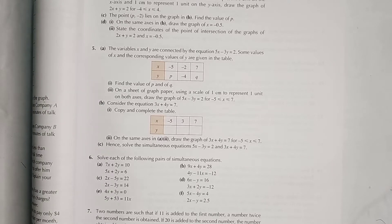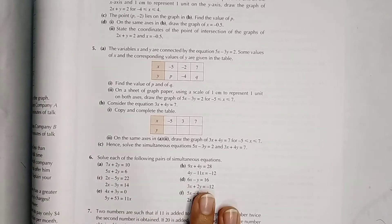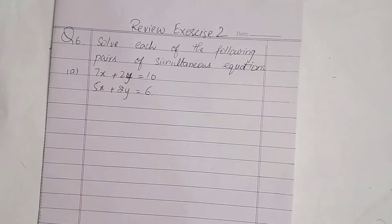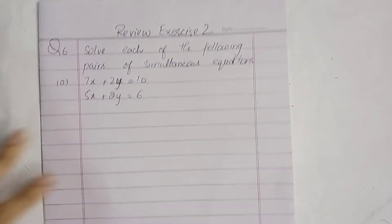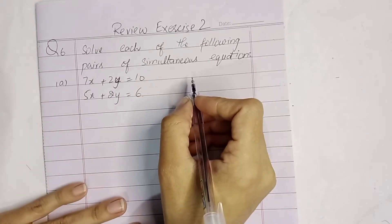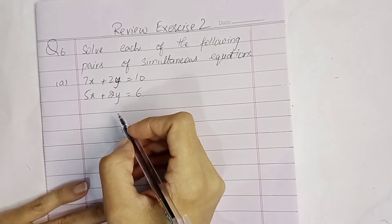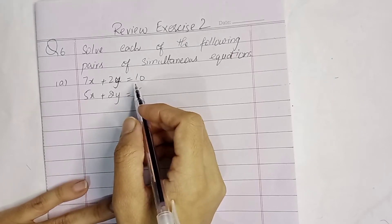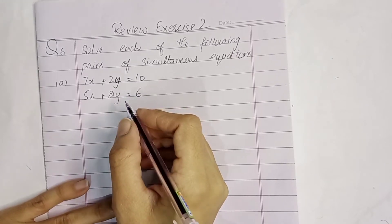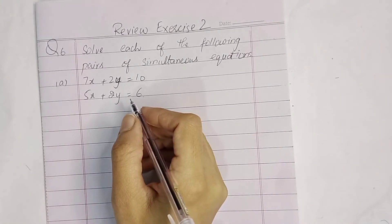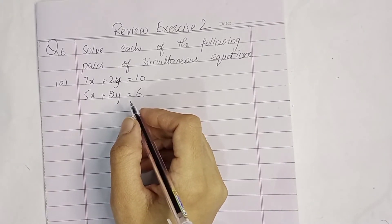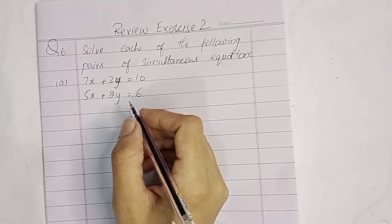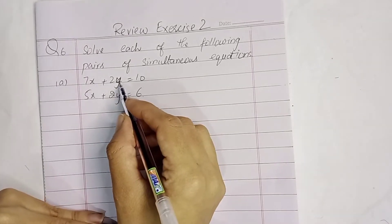Bismillahirrahmanirrahim. Assalamu alaikum students. This is the exercise review of Book D2. Today we will do question number 6. We have to solve each of the following pairs of simultaneous equations. We can use any method of our choice — elimination, substitution, or graphical. Here we will use elimination or substitution.